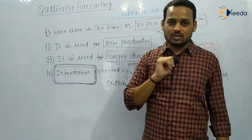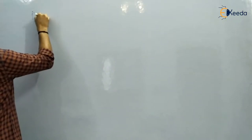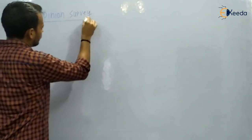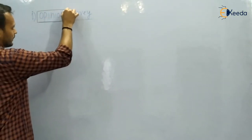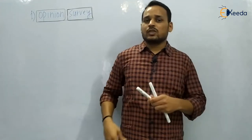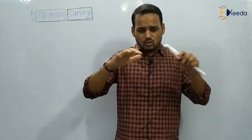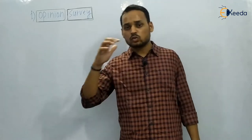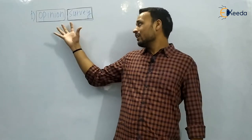Qualitative forecasting is classified into four categories, and we will look at each type one by one. The first one is opinion survey. From the name itself it is clear — we take the opinions of different people. In this type of forecasting, we collect the opinions from retailers, distributors, and consumers, and these opinions are used as feedback which is provided to the company to forecast the product.